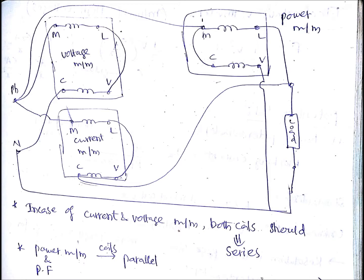First, if you observe the voltage measurement, both the coils are connected in series. L is connected to the V and C is connected to the neutral. That means the complete circuit is in series because the coils are connected in series.